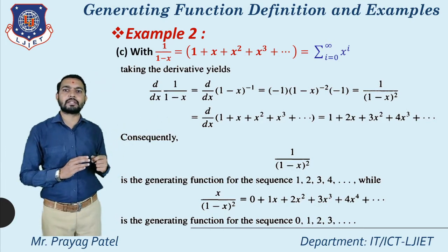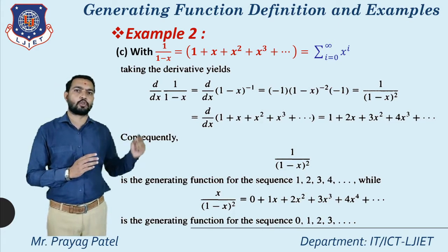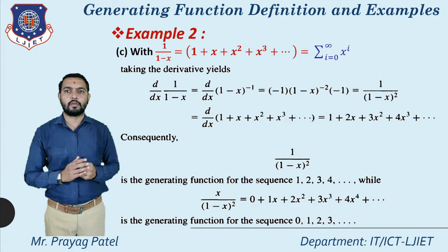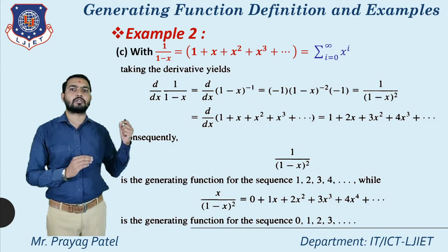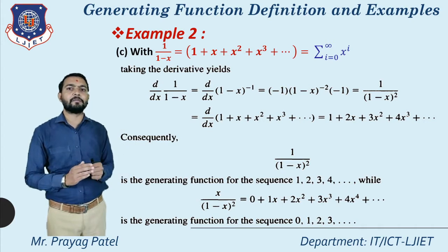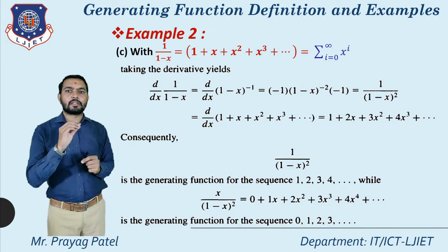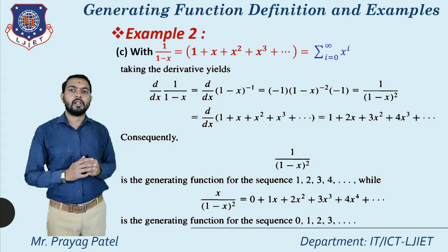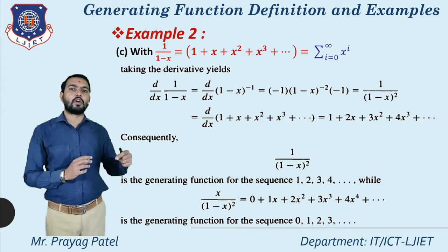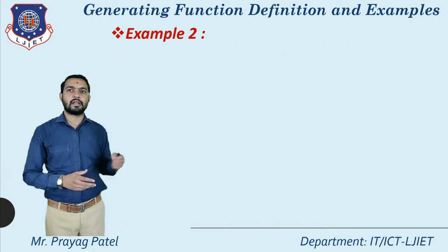So if the sequence is 1, 2, 3, 4 then the generating function is 1/(1-x)². And if the sequence starts at 0, that is 0, 1, 2, 3, then the generating function is x/(1-x)². This is part c.